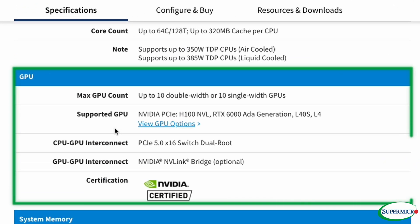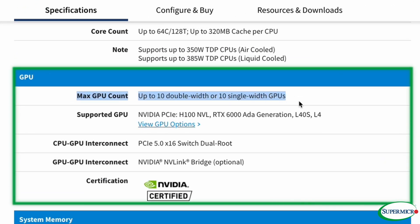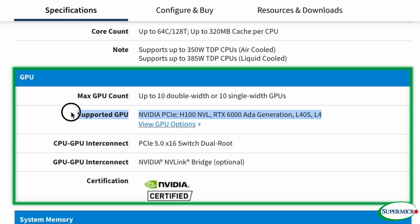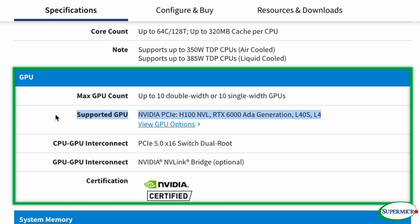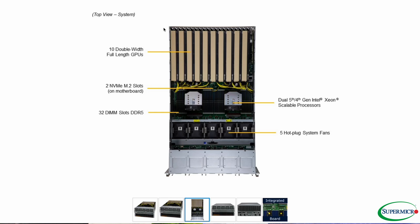What about the GPUs? This system can accommodate 10 GPUs, with any GPU up to about 300 watts — so that means an H100 or an A100, for example. If you're a customer into deep learning or 3D rendering, this machine has your back.